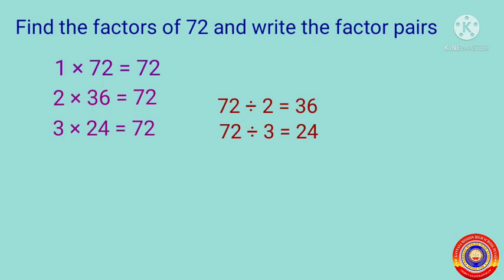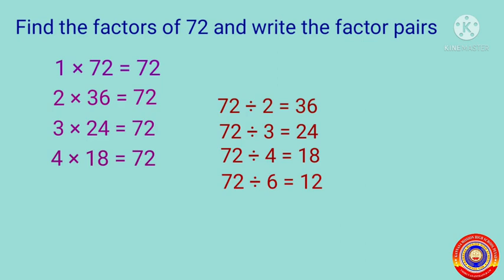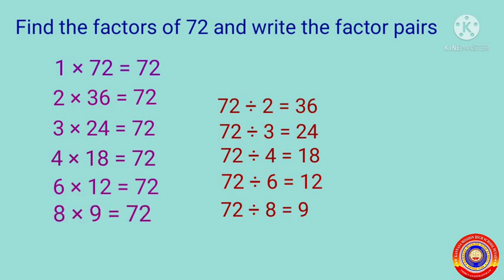72 is divisible by 4: 72 divided by 4 is equal to 18, therefore 4 multiplied by 18 is equal to 72. Next, 72 is also divisible by 6: 72 divided by 6 is equal to 12, therefore 6 into 12 is equal to 72. 72 is also divisible by 8: 72 divided by 8 is equal to 9, then 8 multiplied by 9 is equal to 72.